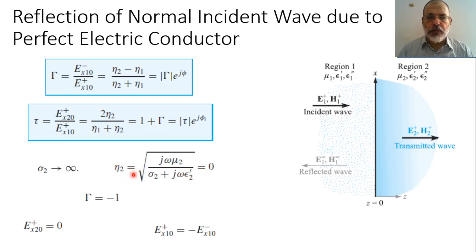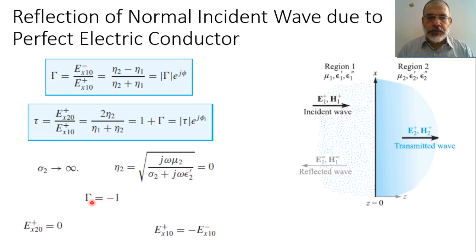The reflection coefficient gamma would be (0 minus eta1) over (0 plus eta1), so it would be minus 1. The magnitude of the reflection coefficient would be 1 and the phase would be pi. The transmission coefficient tau would be 1 plus gamma = 1 minus 1 = 0.